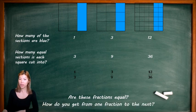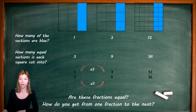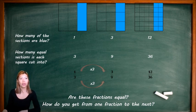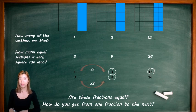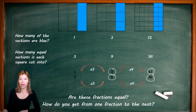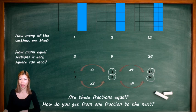How do you get from one fraction to the next? One times three is three, and three times three is nine, so we multiply by three to go from that first fraction to the middle fraction. To get to the last fraction, three times four is 12, and nine times four is 36, so we multiply the top and bottom by four. In summary, if we multiply the top number and the bottom number by the same number, we're going to get an equivalent fraction.